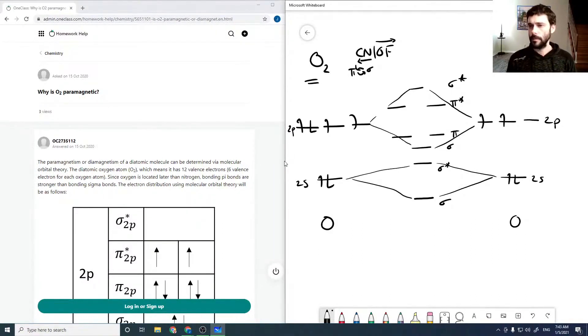Okay, and so we can just take these 12 valence electrons and fill them in: 2, 3, 4, 5, 6, 7, 8, 9, 10, 11, 12.